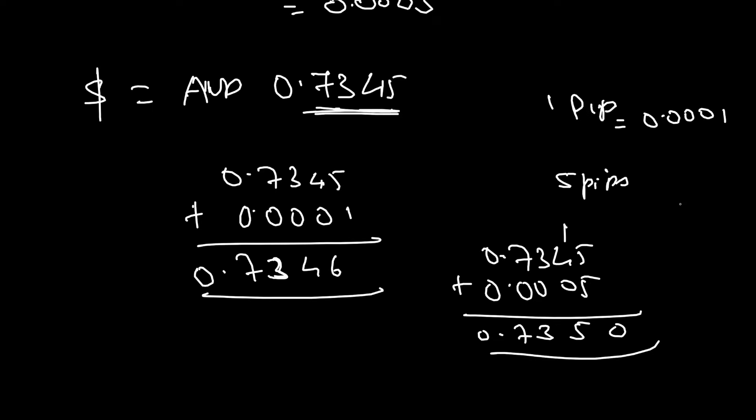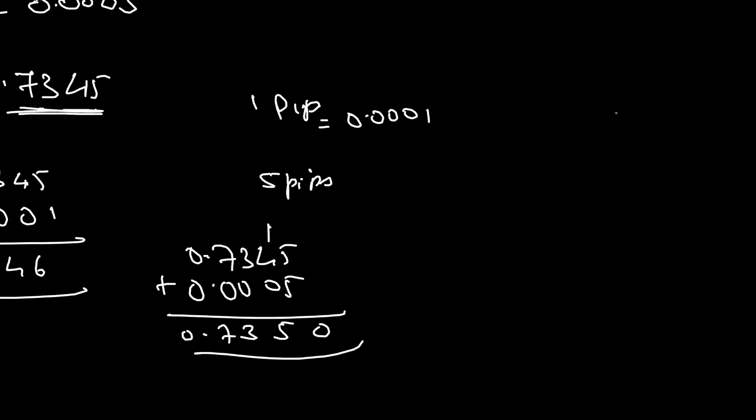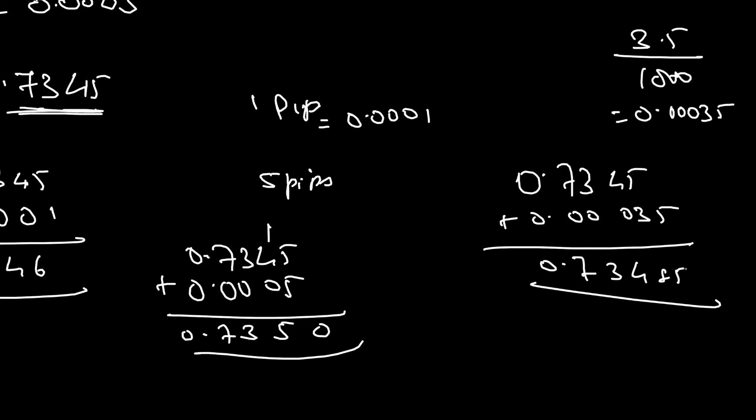Suppose if I say it is something like 3.5 points. 3.5. So, in that case, 0.7345. Now, 3.5 divided by 10,000 will be 0.00035. So, 0.00035. Now, when I add this, you will get 0.73485. So, this is how you are supposed to calculate PIPs.